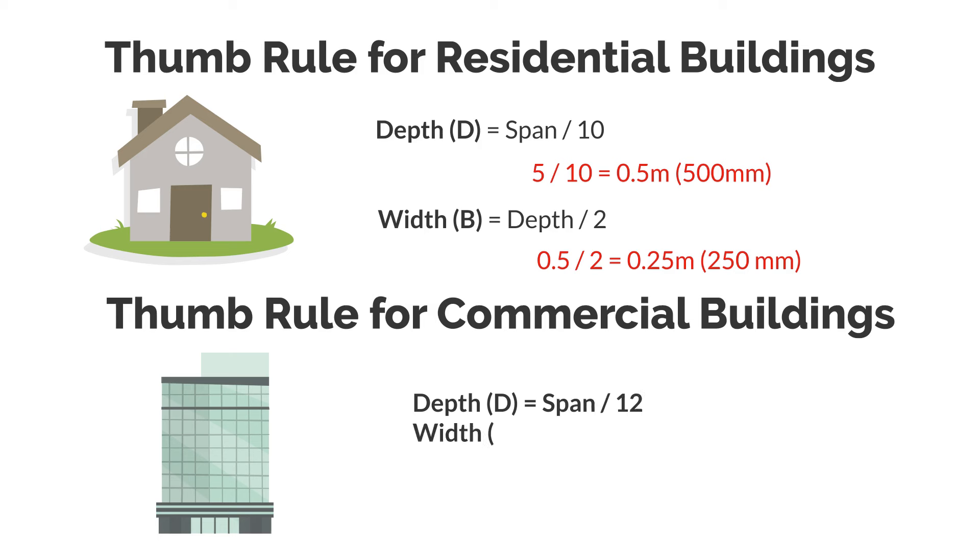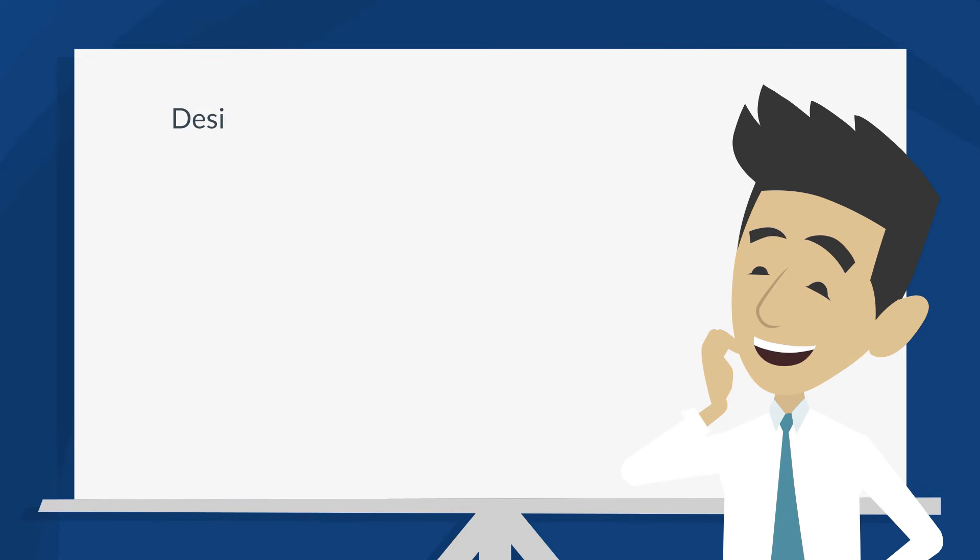The thumb rule for commercial buildings is depth equals span divided by 12, and width equals depth divided by 3. If a beam spans 8 meters or more, we'll use the thumb rule for commercial buildings.